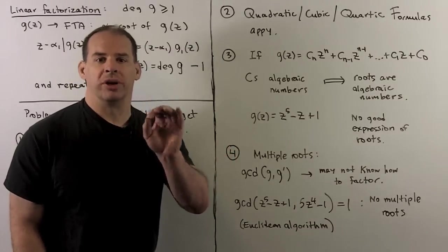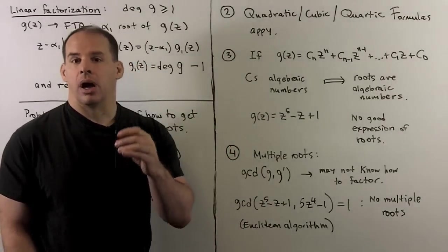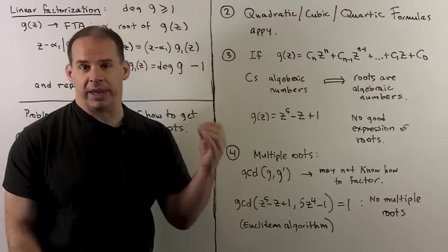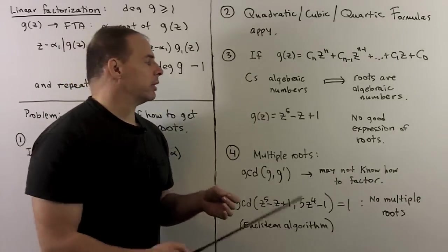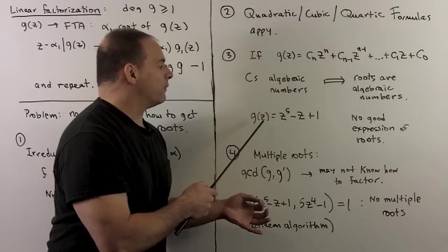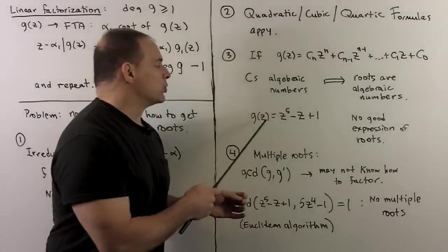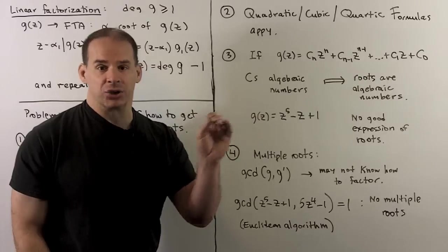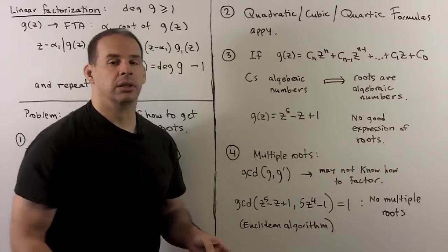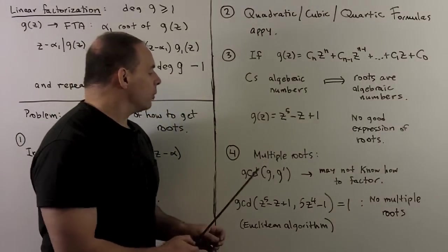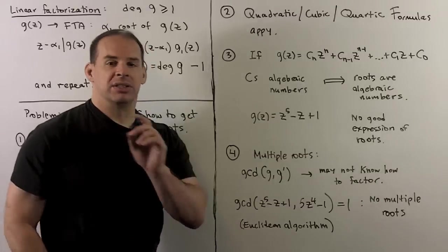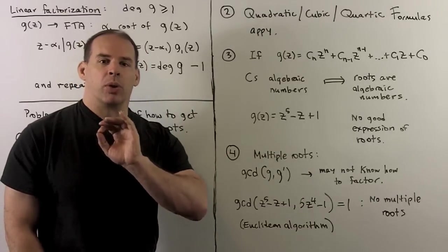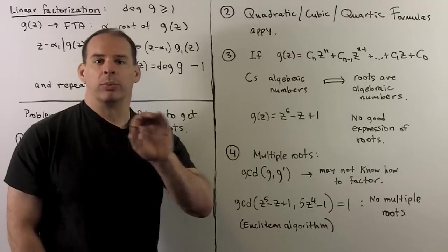Another thing: we could take polynomials with coefficients that are algebraic numbers, and the roots will also be algebraic numbers. But that's not as great as it sounds. For z⁵ − z + 1, the coefficients are integers, yet the roots have no good expression — we can't write them as arithmetic operations and radicals of rational numbers. Another thing to check is multiple roots: we check the greatest common divisor of g and its derivative. If their GCD is 1, there are no multiple roots; otherwise, factoring the GCD reveals which multiple roots exist and their multiplicities.